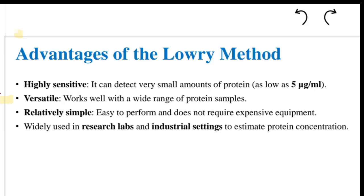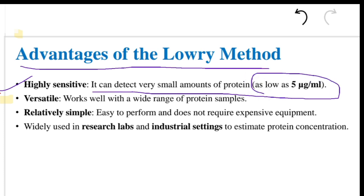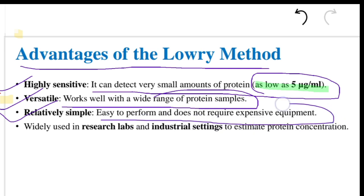These are the different advantages of the Lowry method. It is highly sensitive because it can detect very small amounts of protein, as low as 5 micrograms per milliliter. It is more sensitive compared to the Bradford assay. It works well with a wide range of protein samples, is relatively simple, easy to perform, doesn't require expensive equipment, and is widely used in research labs and industrial settings.